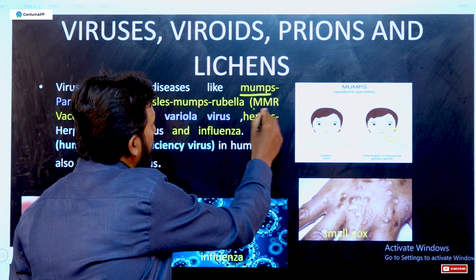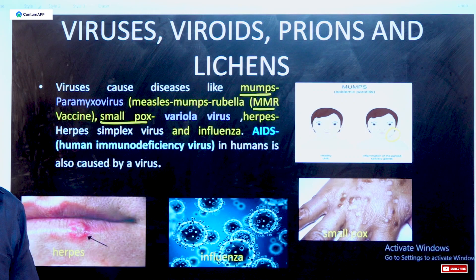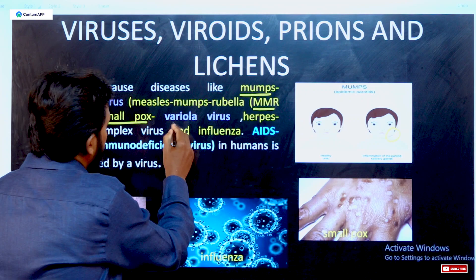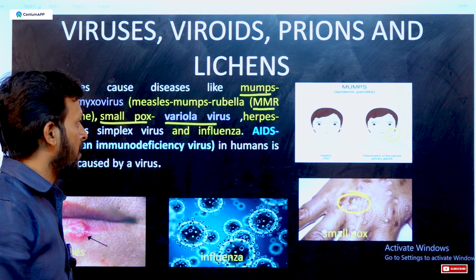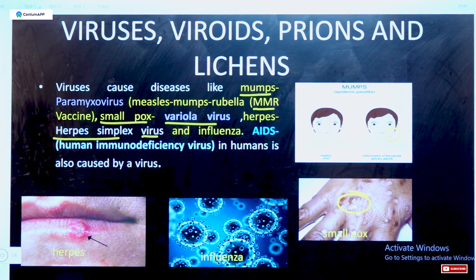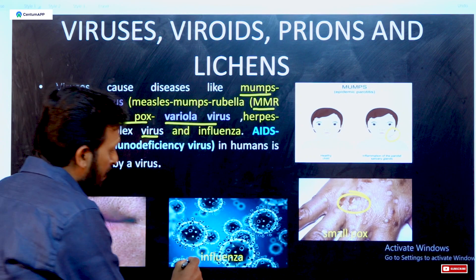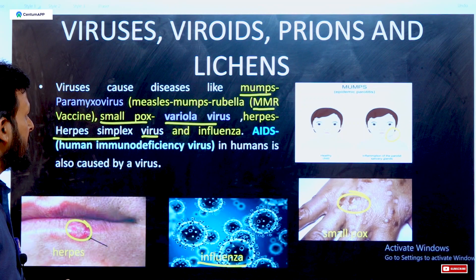Smallpox mostly affects adult-age persons and is caused by the variola virus; it is common in summer seasons. Herpes virus is a simple virus affecting the digestive system and causing inflammation at the lip region. Influenza virus causes respiratory problems. AIDS is caused by the Human Immunodeficiency Virus, called HIV. These are the main animal viruses.